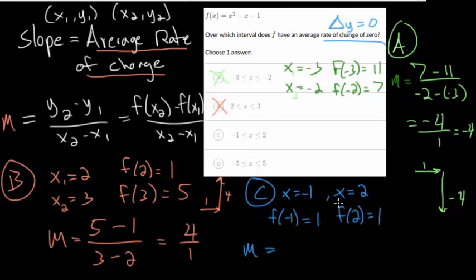Because if we now use our formula, let's call this x2 and that's x1. So you have 1 minus 1 over 2 minus negative 1, so that becomes 0 over 3, which is 0. So on average, every time x goes over, y does not go up or down. It stays the same. So c is going to be our correct answer.